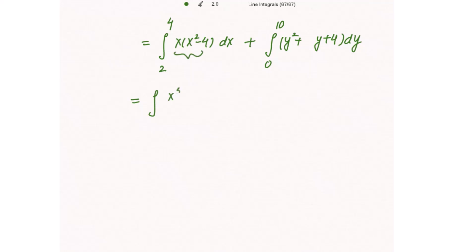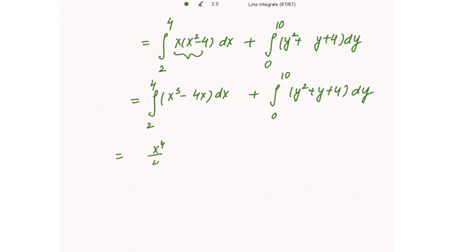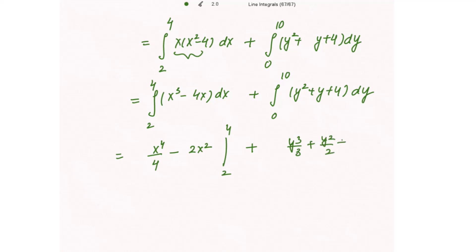Simplifying, we get the integral of (x³ - 4x) dx from 2 to 4, plus the integral of (y² + y + 4) dy from 0 to 10. Integrating: x⁴/4 - 2x² evaluated from 2 to 4, plus y³/3 + y²/2 + 4y evaluated from 0 to 10.